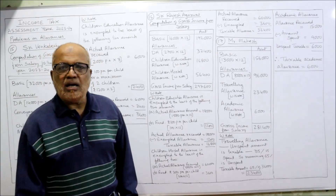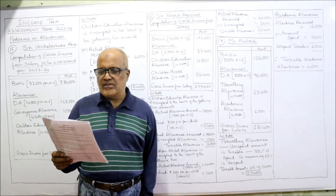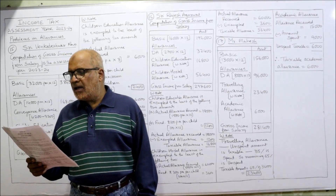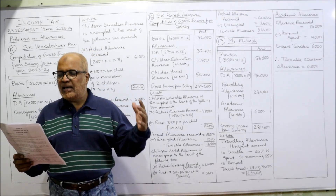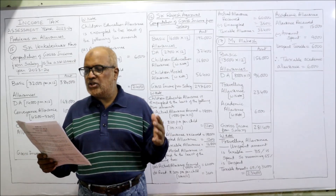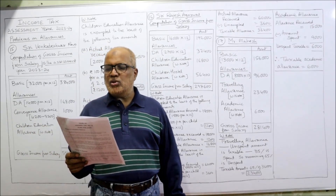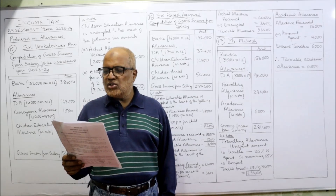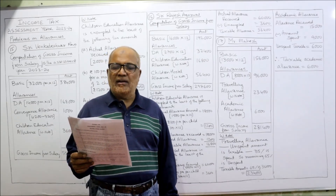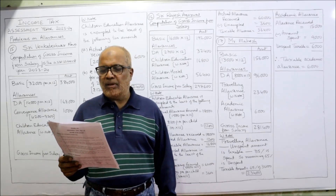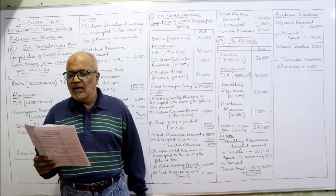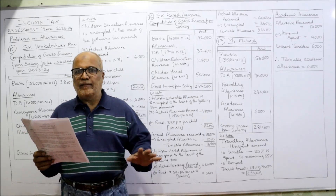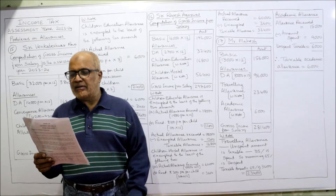Now the last and final problem on allowances. Mr. Mahesh is working in a multinational corporation in Bangalore. Compute gross income from salary. Details: basic pay 13,000 per month, DA 8,000 per month, travelling allowance 3,000 per month and 35% is spent, and academic allowance per annum is 15,000 with actual amount spent 9,000.